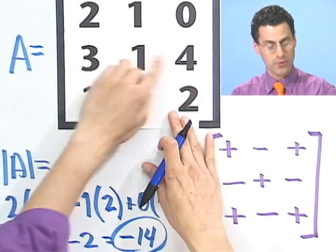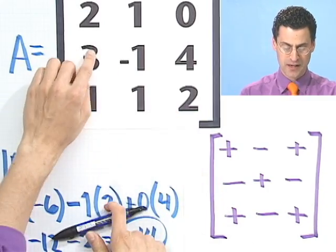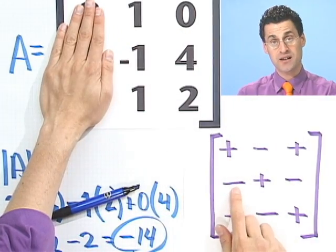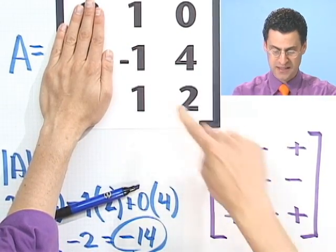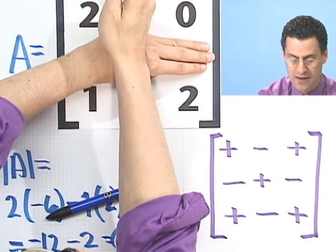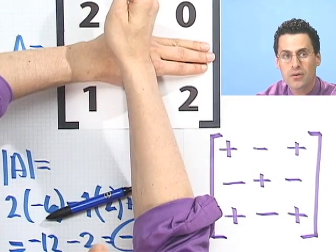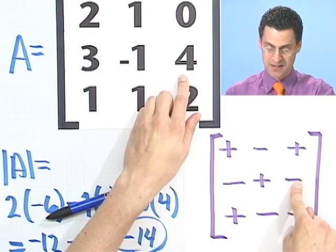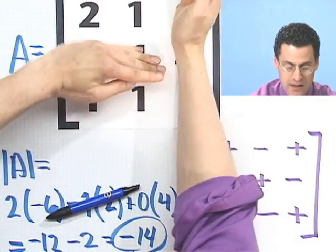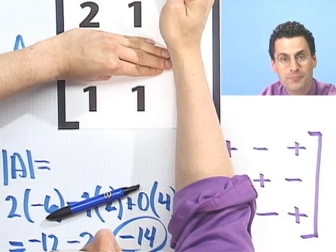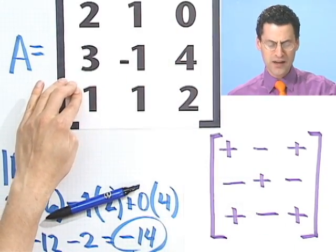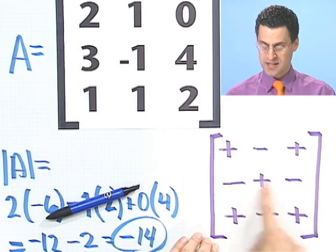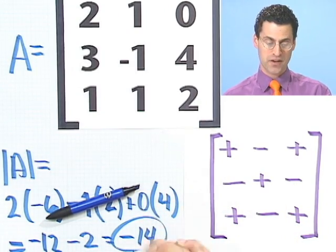You could have expanded along any other row as well, in exactly the same way. For example, expanding along the second row: take 3 and multiply it by the appropriate 2x2 determinant, but note there's a negative sign there. Then take negative 1 with a positive sign, cross out its row and column — you can see the 2x2 matrix is 2, 0, 1, 2. Take that determinant and add it. You can expand around any row, or even any column — just keep track of the sign chart, which tells you how to add and subtract to find the determinant.